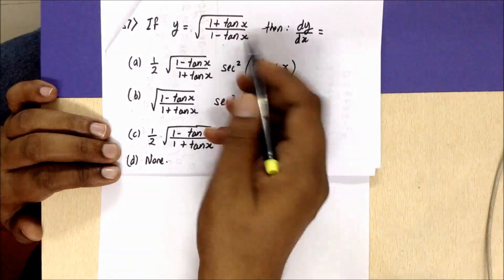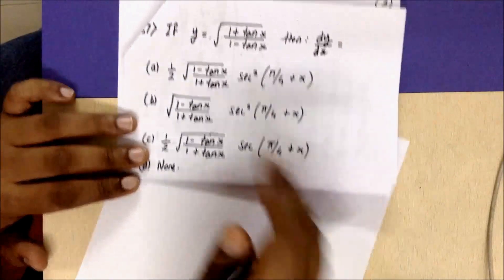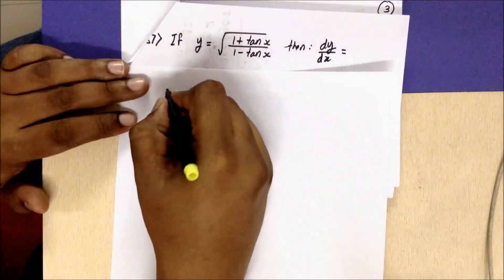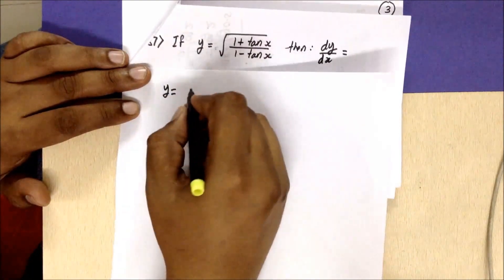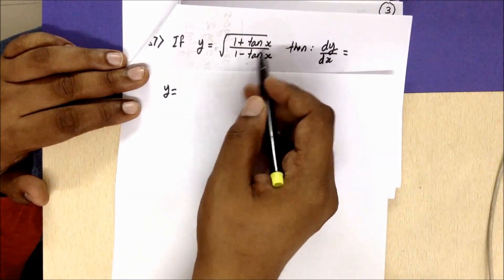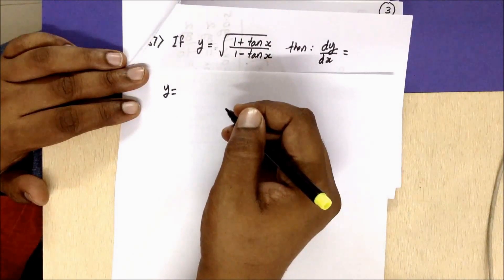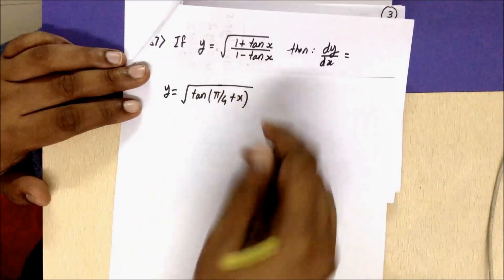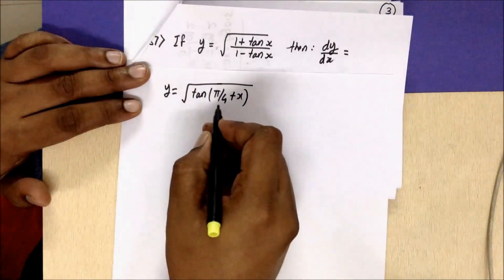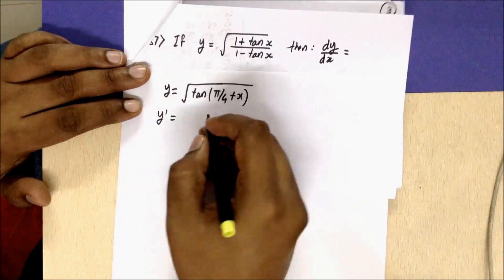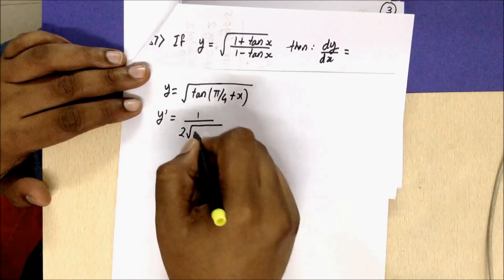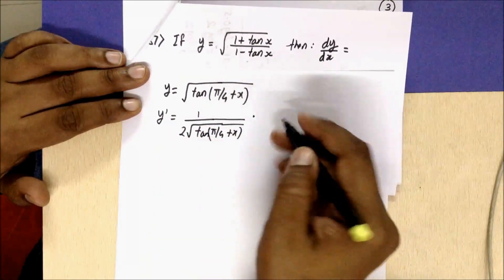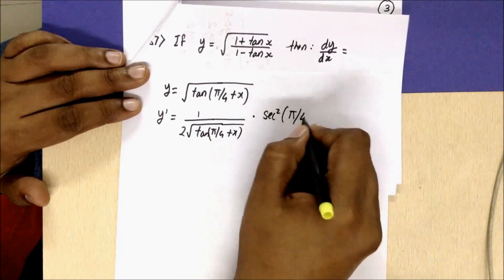The sixth question gives y = √((1 + tan x)/(1 − tan x)) and asks for dy/dx. This expression is complicated, so we simplify: (1 + tan x)/(1 − tan x) is the formula for tan(π/4 + x). Therefore y = √(tan(π/4 + x)). Now we find the derivative of this expression.